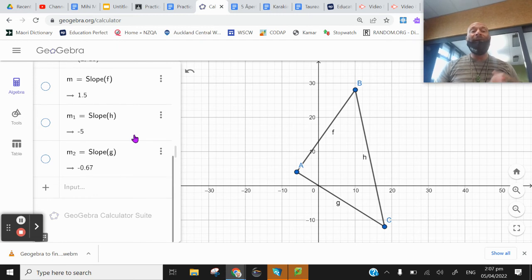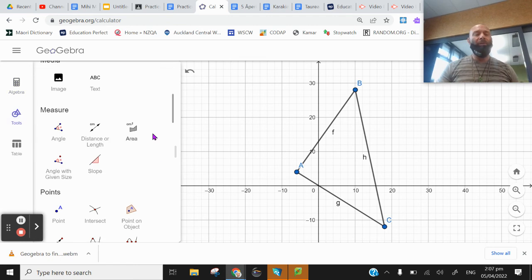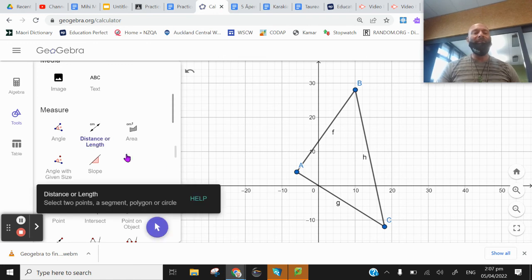What we want to do now is find the length of a segment. Once again, tools. So there you're going to find the distance between two points. There it is. We're measuring the distance. Click on distance and it says select two points.